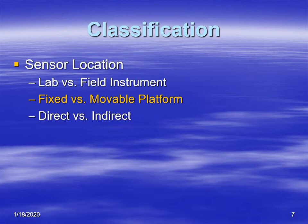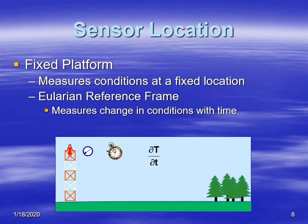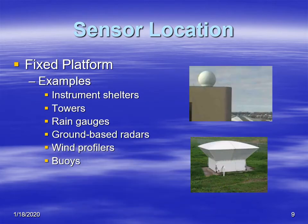Another classification method is whether the instrument is fixed or moving. A fixed platform measures conditions at a given location that is not moving. When we make measurements at a fixed location over time, we call that a Eulerian reference frame — the location doesn't change, only time does, which in calculus would be a partial derivative with respect to time. Examples of fixed instruments include rain gauges, anemometers, radars, and wind profilers, all of which stay in one location and constantly monitor the atmosphere.